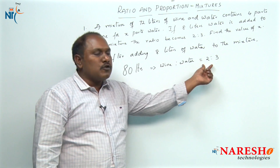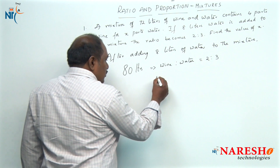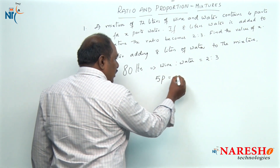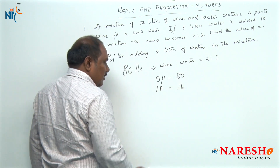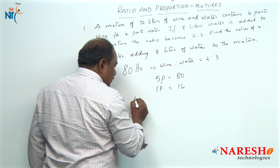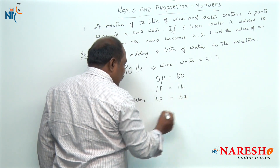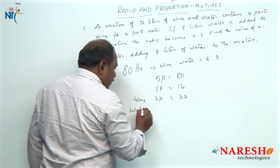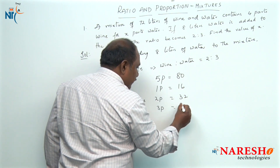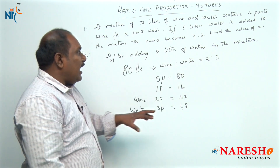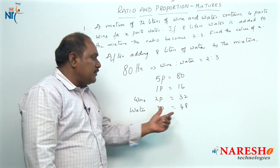Wine is 2 parts, water is 3 parts, so total it is 5 parts. 5 parts should be equal to 80, so 1 part will be equal to 16. Wine is 2 parts, which should be equal to 32, and water is 3 parts, which should be equal to 3 into 16, that is 48.